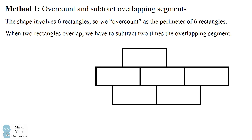When two rectangles overlap, we have to subtract two times the length of the overlapping segment. This is because the segment will overlap for two different rectangles. For example, if we look at the top brick, we have one of its lengths overlapping with another two rectangles. So to account for this overlapping region, we need to subtract out two lengths. In the bottom rectangle, we have another overlapping length, so we again subtract out two lengths. We have the same thing in the other bottom rectangle.